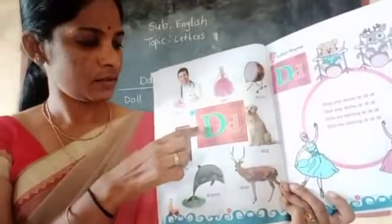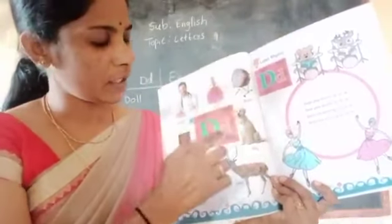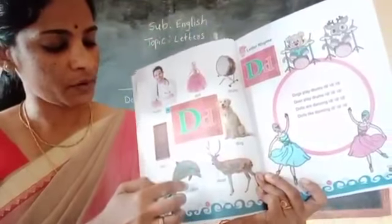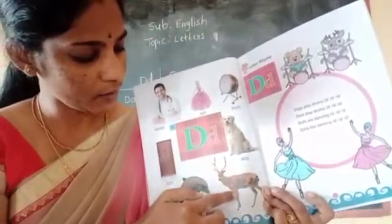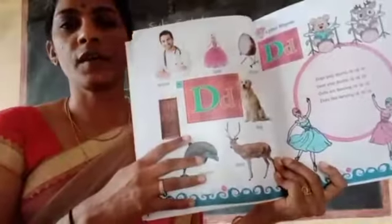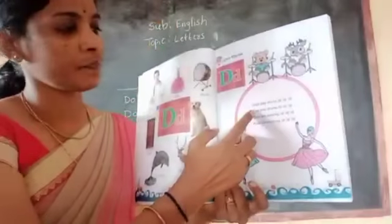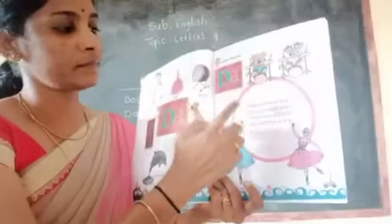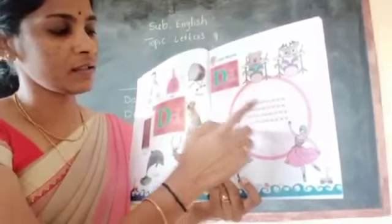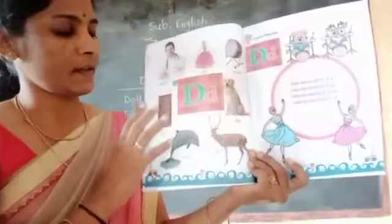D for doctor, D for dog, D for drum, D for door, D for dolphin, D for deer and D for dog. You read it first. And the rhyme: Dogs play drum, deer play drum, dolls are dancing, dolls like a dancing. You read it first.